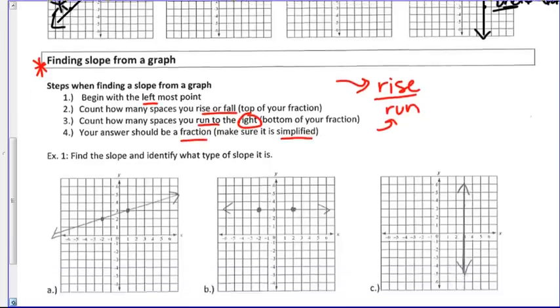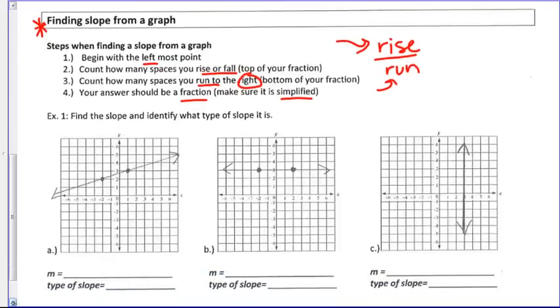Let's take those steps and apply them to example 1A. So first you're going to find the slope and then identify what type. Step one, go with your leftmost point. Step two, count how many spaces you rise. You rose one step. That's the top of your fraction, and how many you run to the right. One, two, three. That's the bottom. So my slope is one third. Simplified, we're good to go. Type of slope, think of that little stick person to the left. What is he doing? He's going uphill. So this is a positive slope.